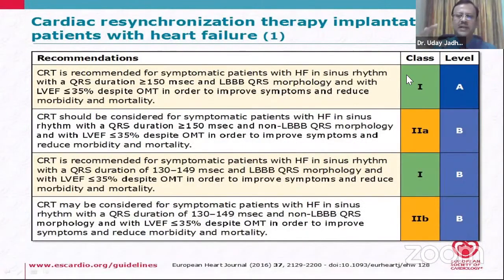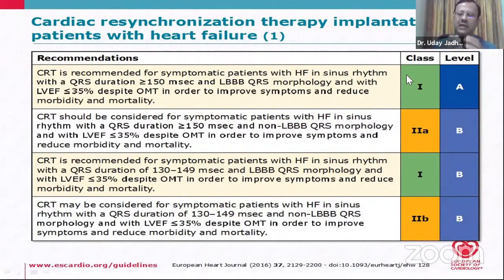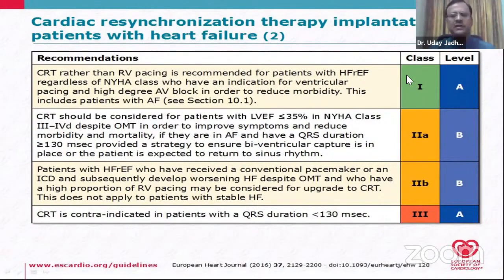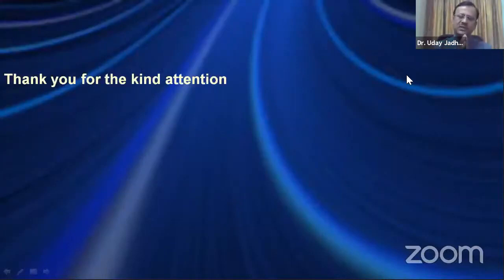In sinus rhythm, with symptoms despite optimal medical therapy, QRS more than 150 ms and LBBB, CRT is a Class 1 indication. Between 130–150 ms there is a lesser but still possible indication. CRT should be preferred over RV pacing in patients requiring pacing due to AV block. CRT is contraindicated if QRS is less than 130 ms. That concludes the recap of the last session.